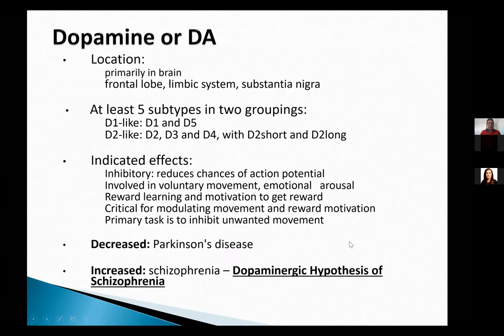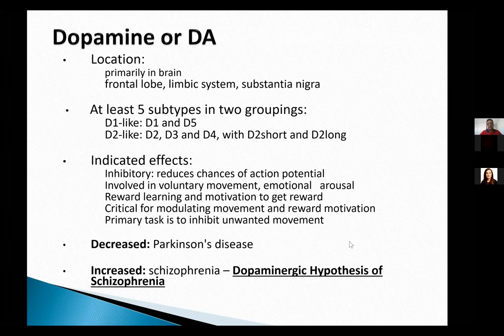Let's talk about dopamine. Dopamine is located primarily in the frontal lobe, limbic system, and substantia nigra — the role of dopamine in Parkinson's is via the substantia nigra. There are five subtypes classified into two major groups: D1-like (D1 and D5) and D2-like (D2, D3, and D4). D2 is further subdivided into short and long types, which is extremely important clinically in terms of adverse effects, especially extrapyramidal symptoms.